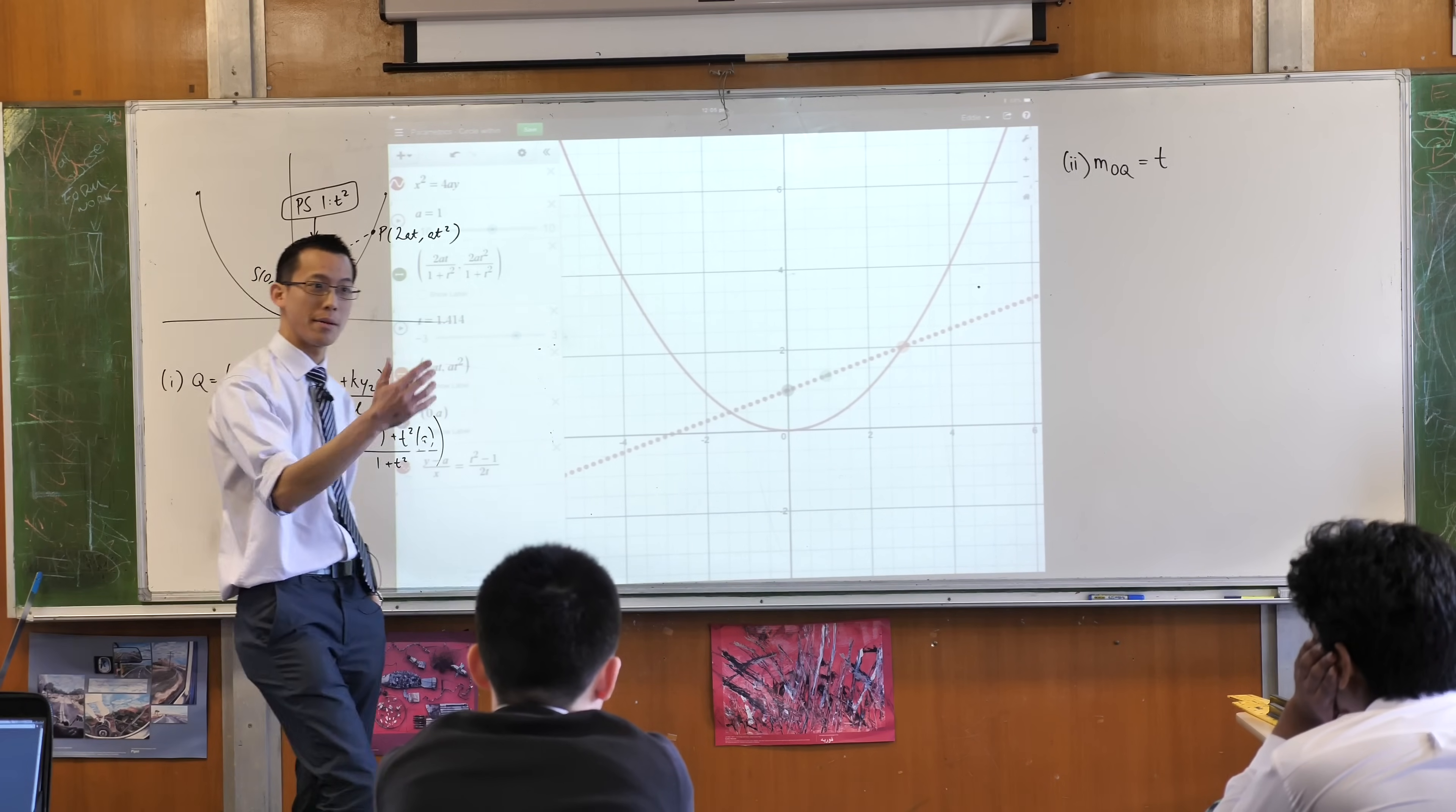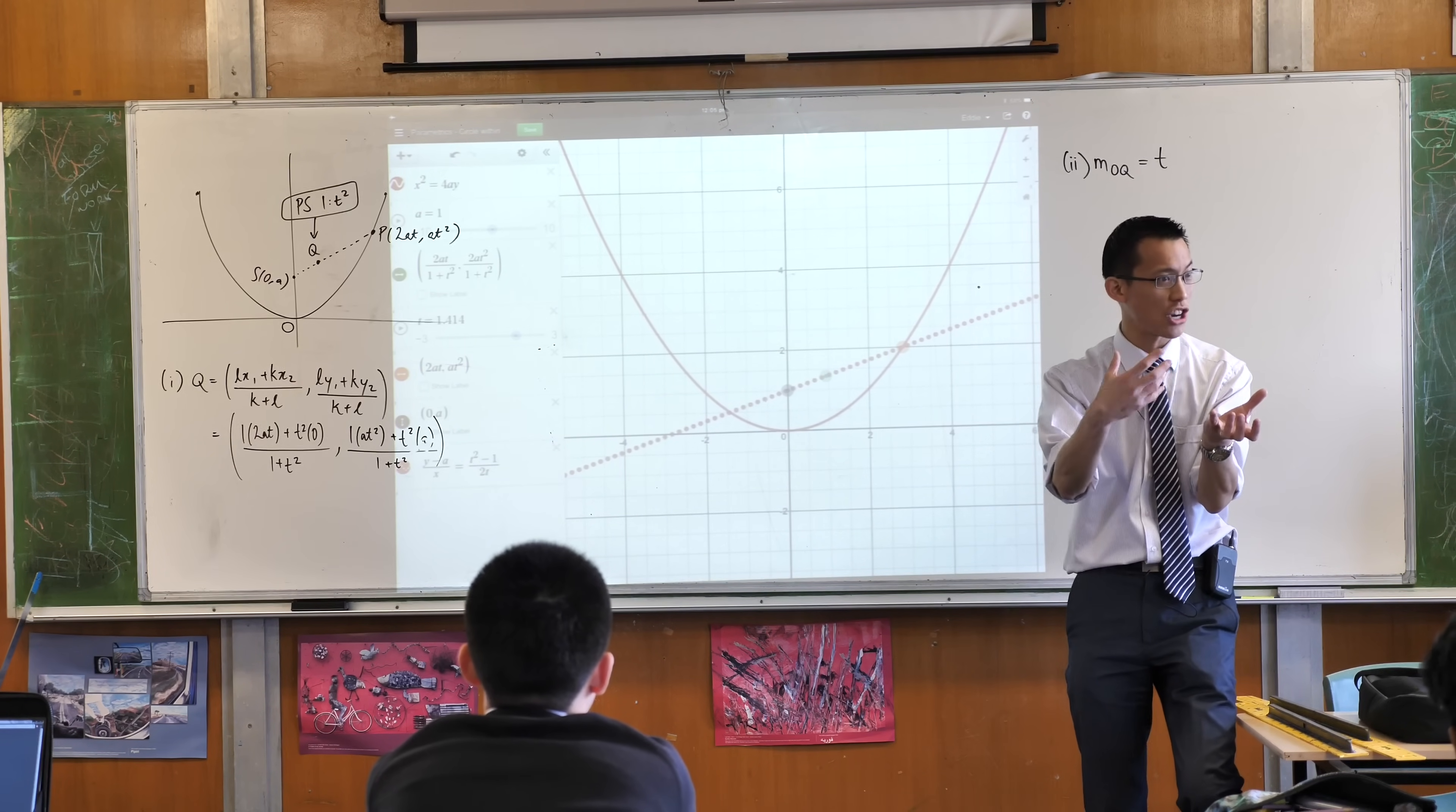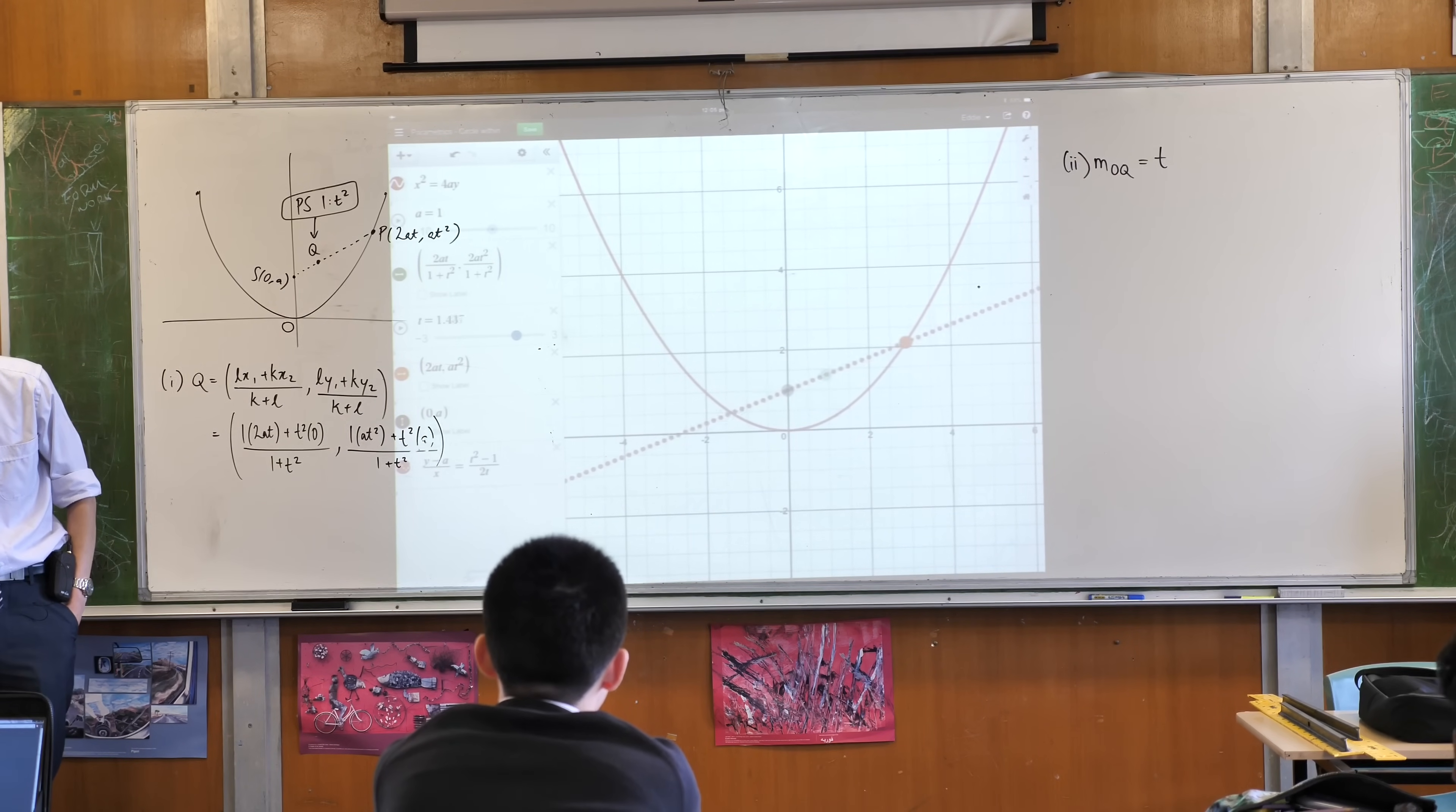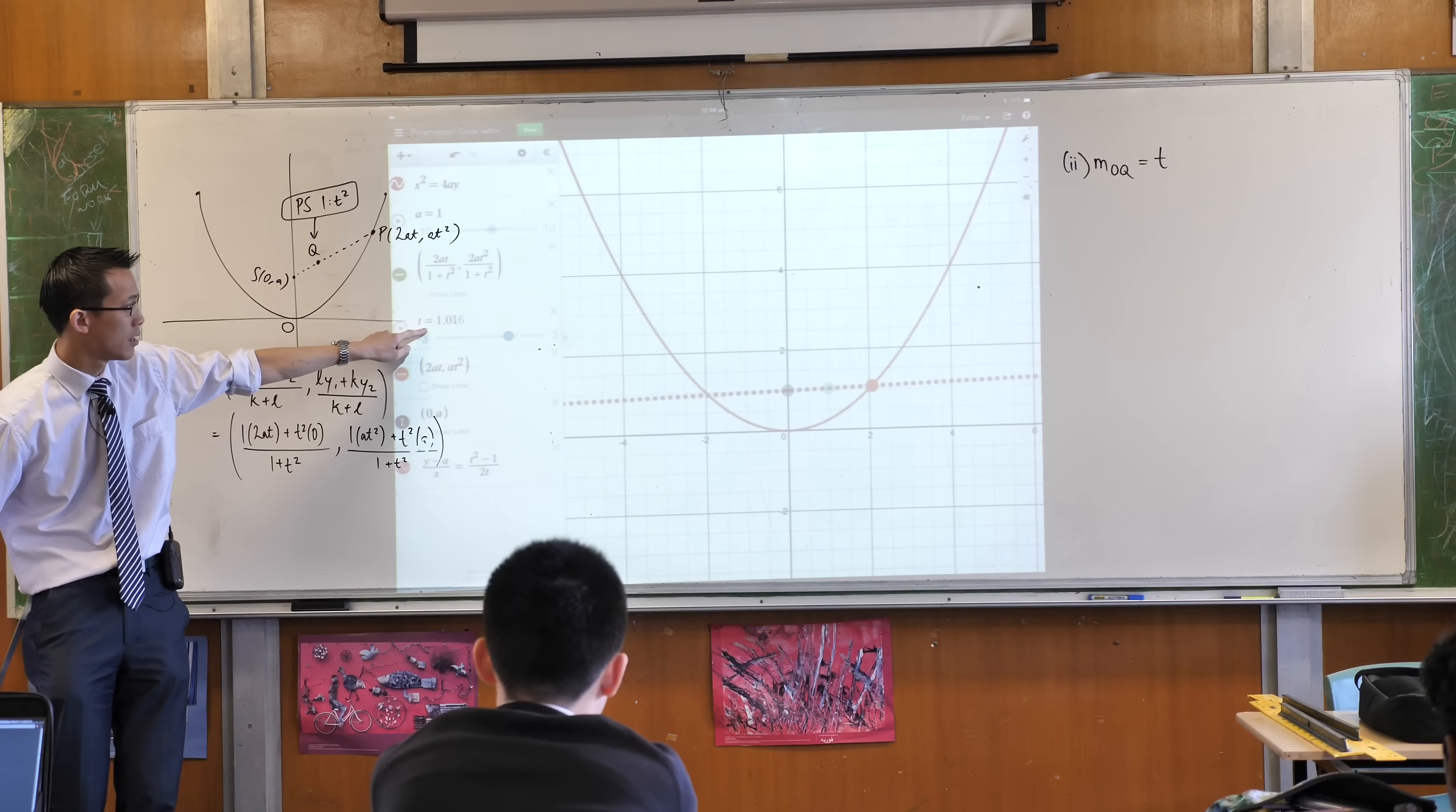Now this is a little bit weird, admittedly, because what defines q, the green point there, what defines q is this internal ratio division of one to t squared, which is weird. Like that means the ratio is constantly changing, because t is changing as I move about. In fact, if you're looking closely, you can see the value of t right there. So that means that as I move further down, it's not like the green dot is always at the midpoint, or it's always a third the way along. It's going to be like one to two, and then one to three, and then one to four. It changes as t changes. Does that make sense?